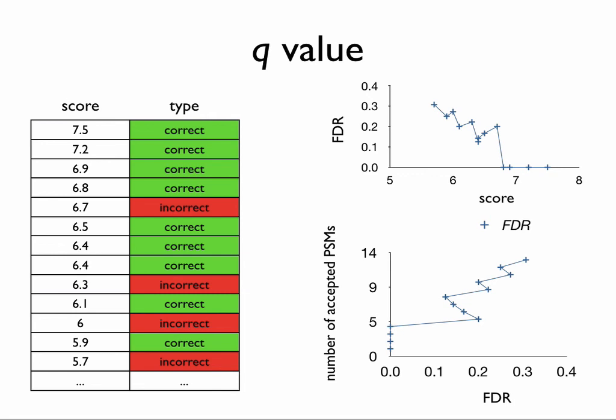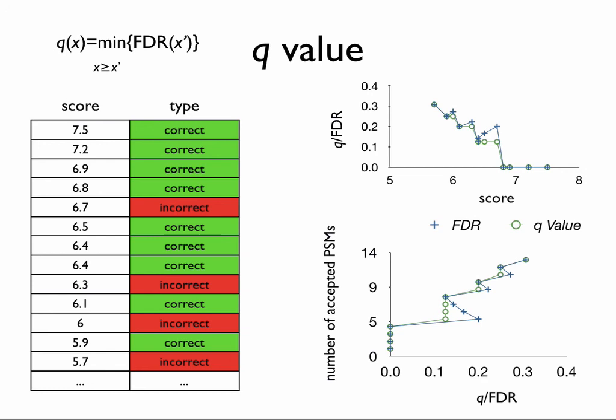That's why we instead look at the q-value, where we take the minimal false discovery rate at each threshold. When we perform this minimization for each threshold, we always find the lower bound — the q-value plotted in green on top of the previous false discovery rate in blue — smoothing out the peaks. At this point it becomes clear what a false discovery threshold really means. If we set a particular q-value threshold, there is a particular number of accepted PSMs and no ambiguity in translating false discovery rate into score.